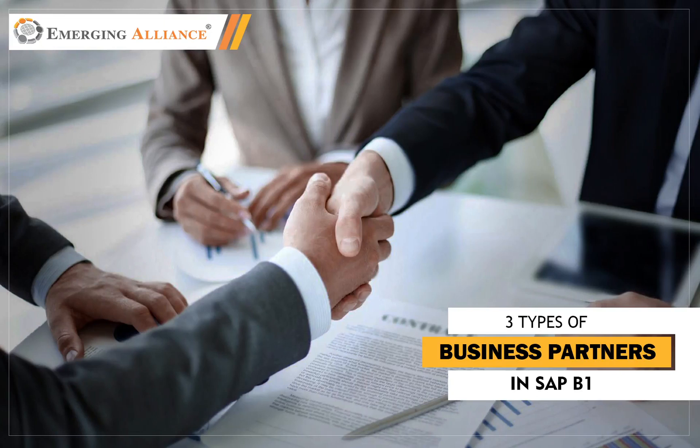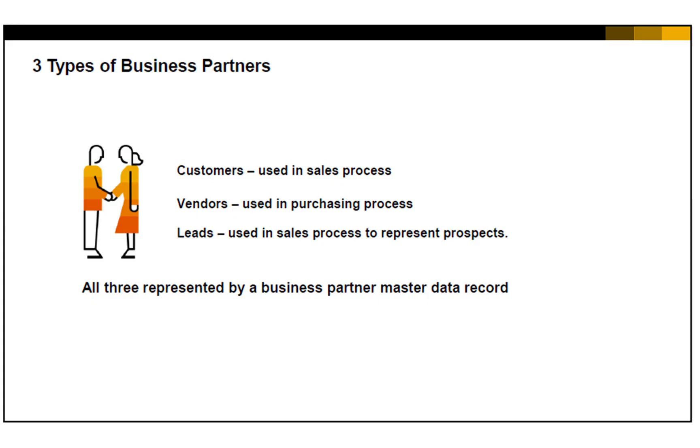In this video you will get to know in detail about three types of business partners in SAP Business One. There are three types of business partners used in purchasing and sales documents.